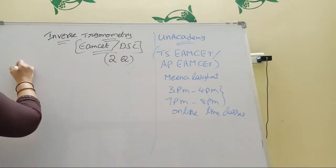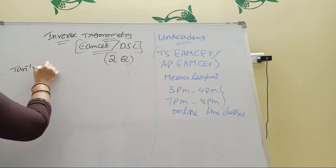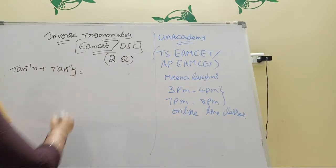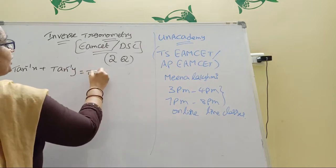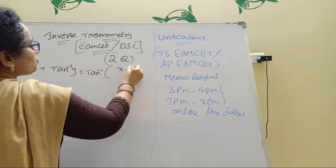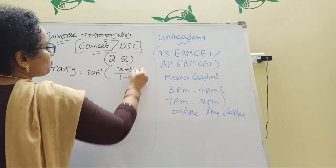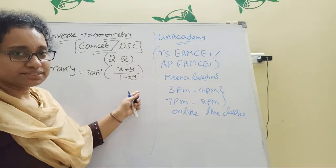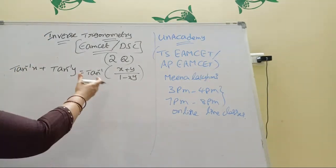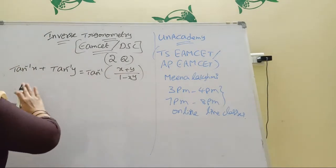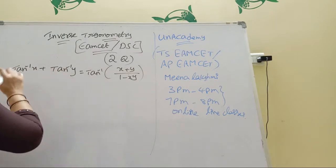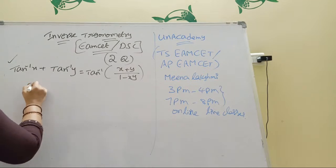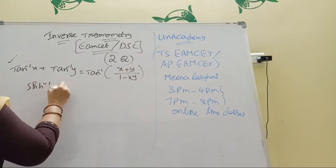Here are the formulas. Remember: tan⁻¹(x) + tan⁻¹(y) = tan⁻¹((x+y)/(1−xy)), where xy < 1. When xy > 1, there is a different formula. You already learned this in first year.